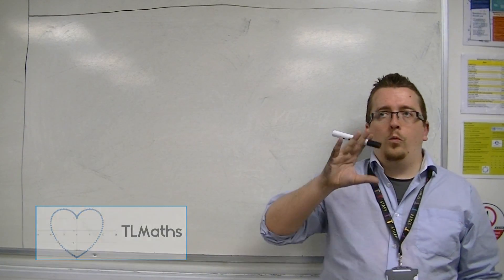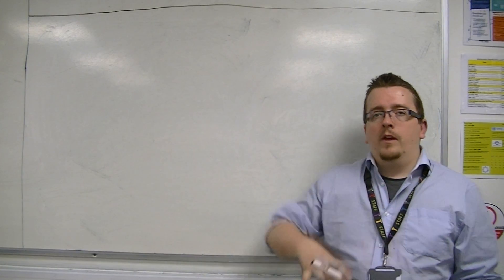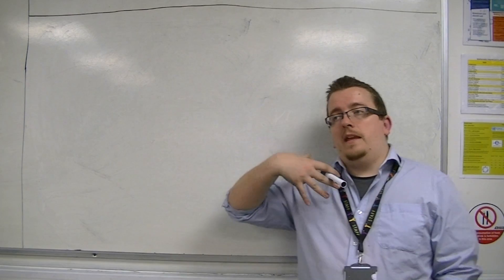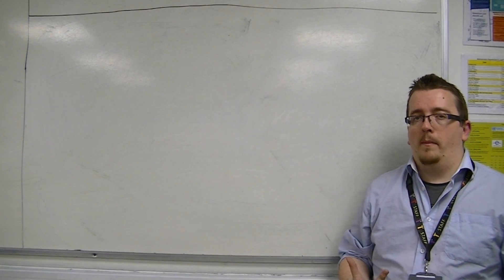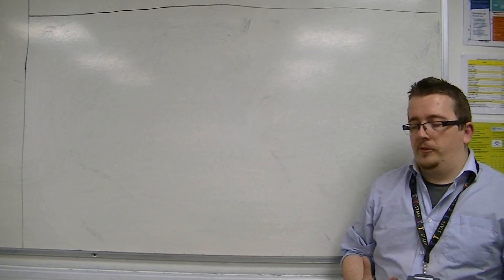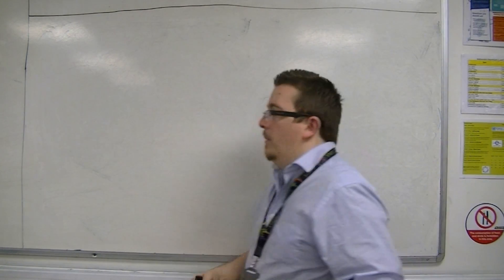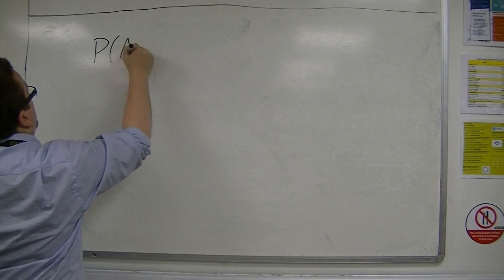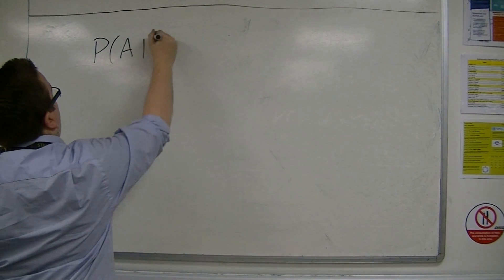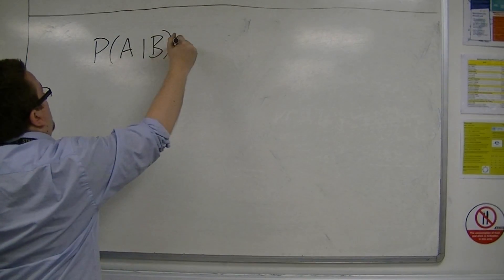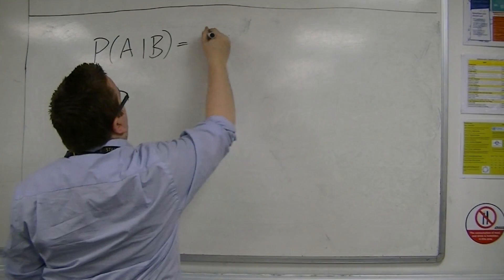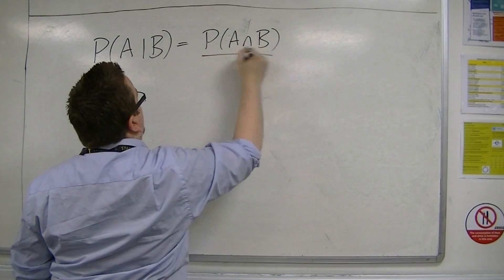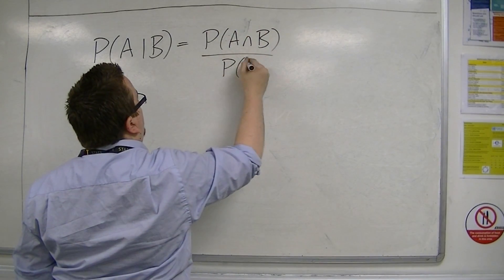So we've met what it means for two events to have a conditional probability. The probability of A, given that B has happened, is the probability of A intersection B over the probability of B.